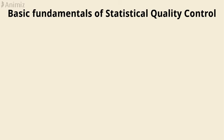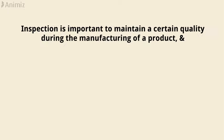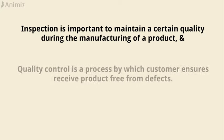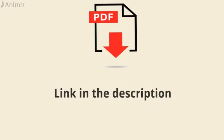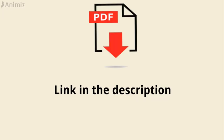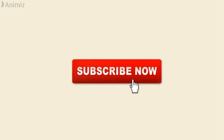To summarize: inspection is important to maintain a certain quality during the manufacturing of a product, and quality control is a process by which the customer receives a product free from defects. If you want to read the article or download the PDF, go through the link in the description. Please like the video and don't forget to subscribe to our channel.